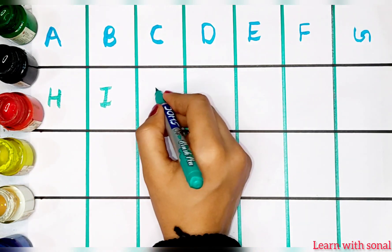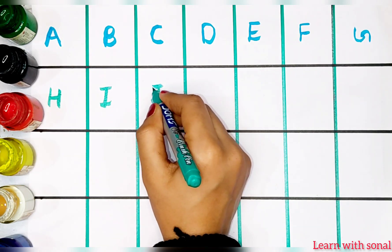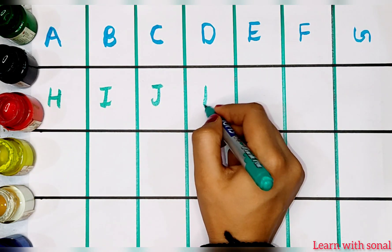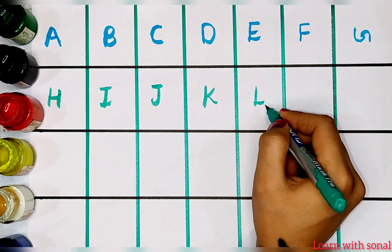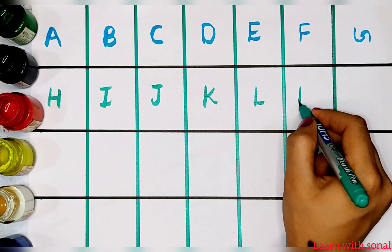I. I for pen. I for ink pot. J. J for jug. K. K for kings. L. L for lotus.